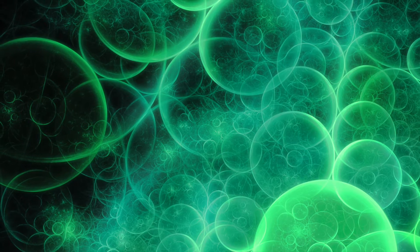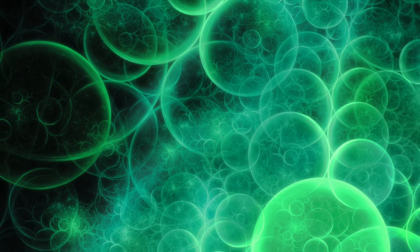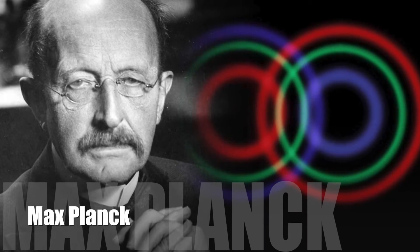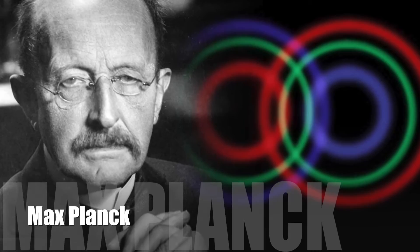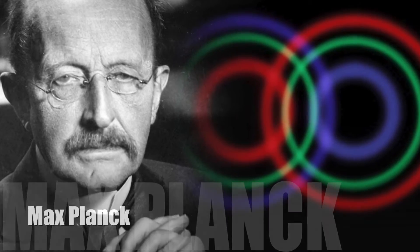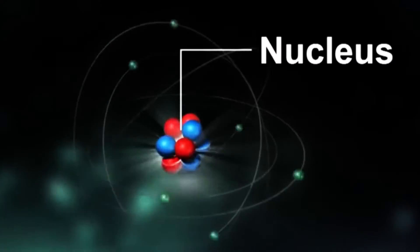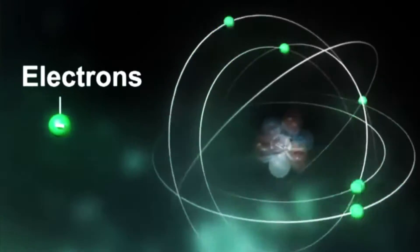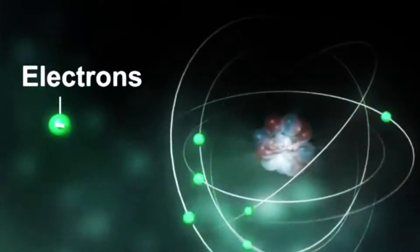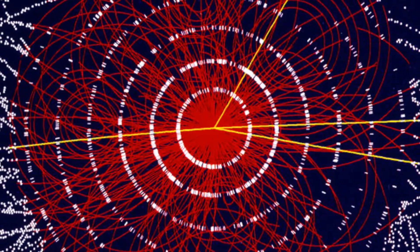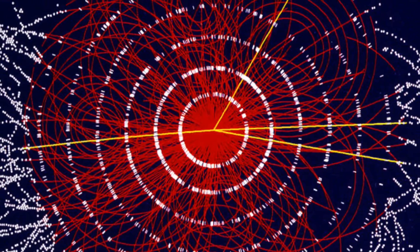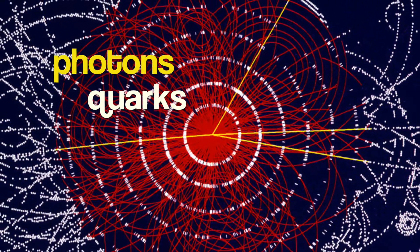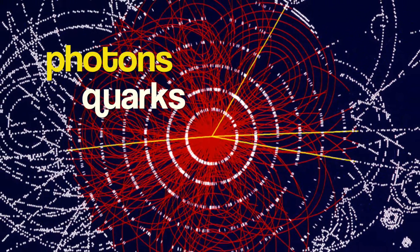By the turn of the 20th century, this view became modified when Max Planck and others realized that atoms contained smaller bits, such as a nucleus and an electron. And those, in turn, contained smaller units still, including photons, quarks, and so on.